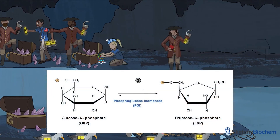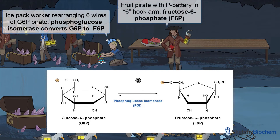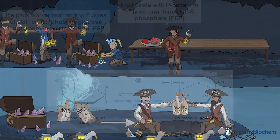Next, phosphoglucose isomerase turns G6P into fructose-6-phosphate, aka F6P. Our iced-up isomerase worker is rearranging six wires on the inside of our hook-handed sea hero to get him ready for his fruit feast, much like how phosphoglucose isomerase rearranges the six carbons of G6P into F6P. Our F6P pirate is holding fruit to remind you of fructose, and the filled battery slot next to her six hook shows the location of the phosphate on the sixth carbon.